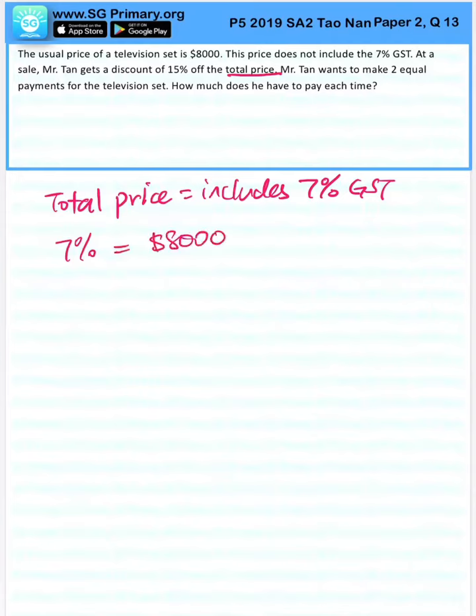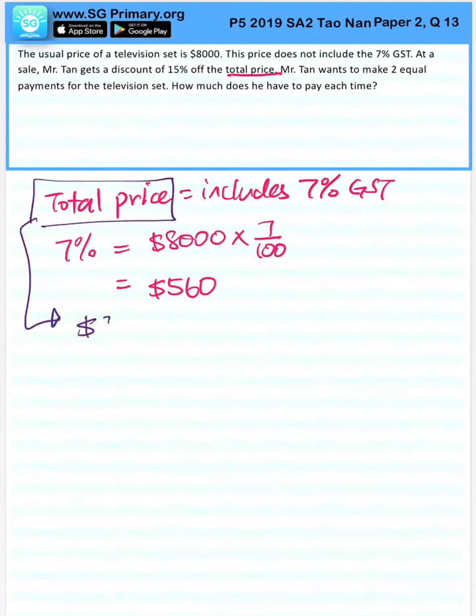$8,000 times 7 over 100. 7% GST will give us $560. So the total price will be $8,000 plus $560, which will give us $8,560.